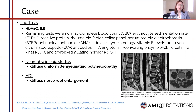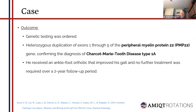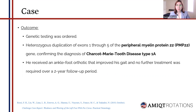On neurophysiological studies there was diffuse uniform demyelinating polyneuropathy, and his MRI showed diffuse nerve root enlargement. Genetic testing was ordered and it was found that he has heterozygous duplication of exons 1-5 of the peripheral myelin protein 22 (PMP22) gene, confirming the diagnosis of Charcot-Marie-Tooth disease type 1A. He received ankle-foot orthotics to improve his gait, and no further treatment was required over a two-year follow-up.